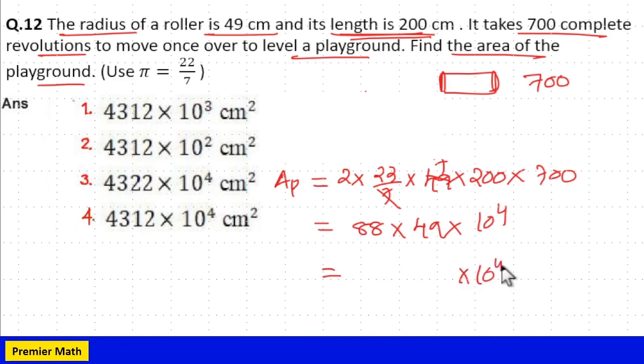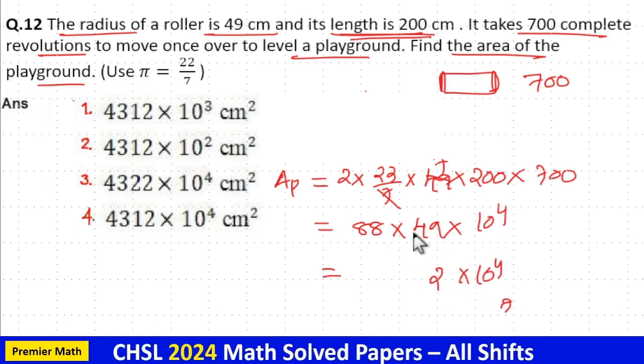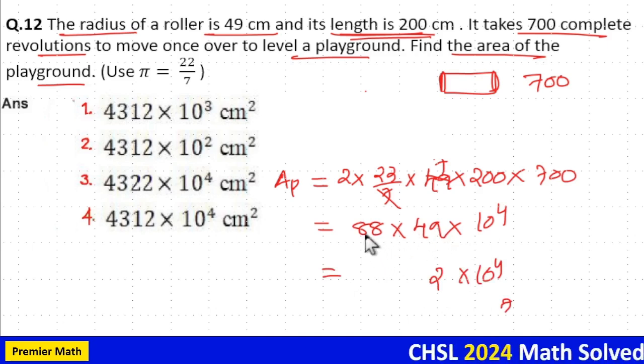Now, 8 times 9 is 72, carry 7. 8 times 4 is 32, plus 7 gives us the digits 43. So we get 4312.